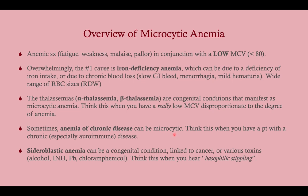Think of anemia of chronic disease when you have a patient with chronic disease, as the name implies. Typically this is autoimmune in the developed world; in the developing world, it's often due to chronic infection. You can also see this in patients with malignancy. Sideroblastic anemia can be congenital or linked to cancer or various toxins, including alcohol, isoniazid — which results in B6 deficiency — lead, and chloramphenicol. Think of this when you hear basophilic stippling.